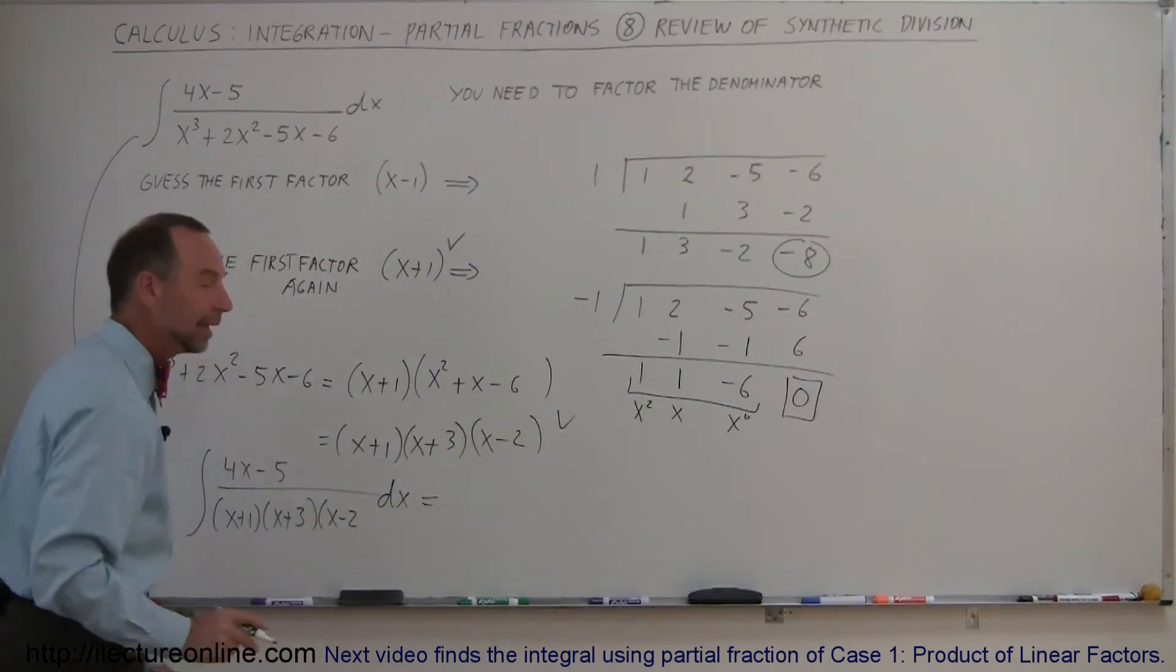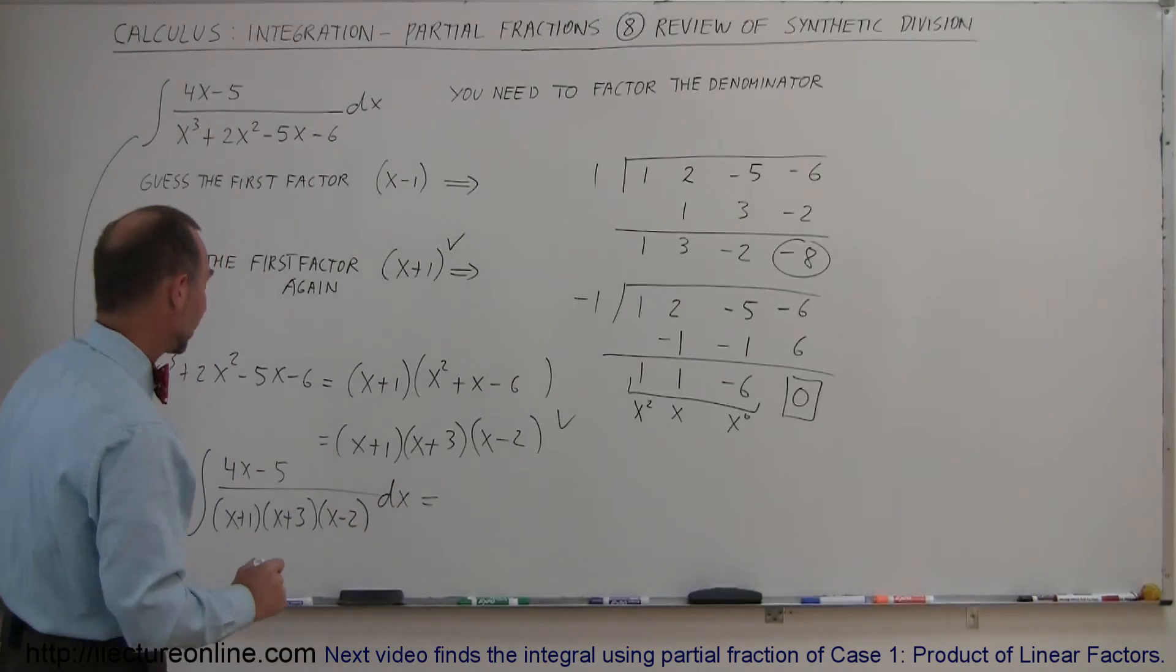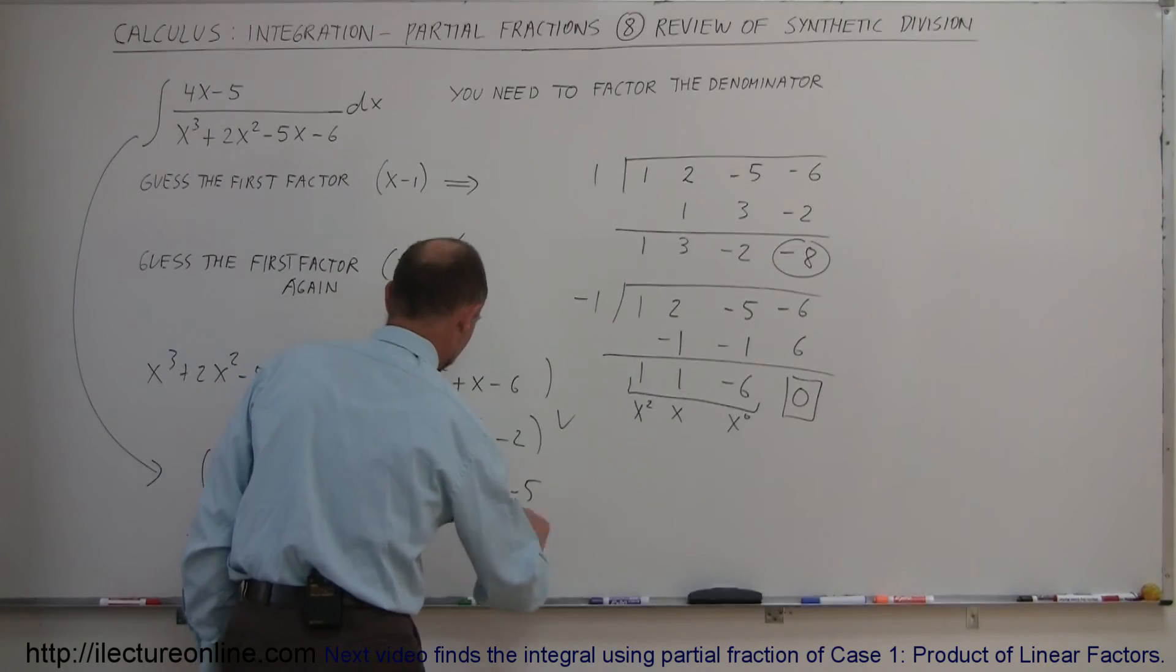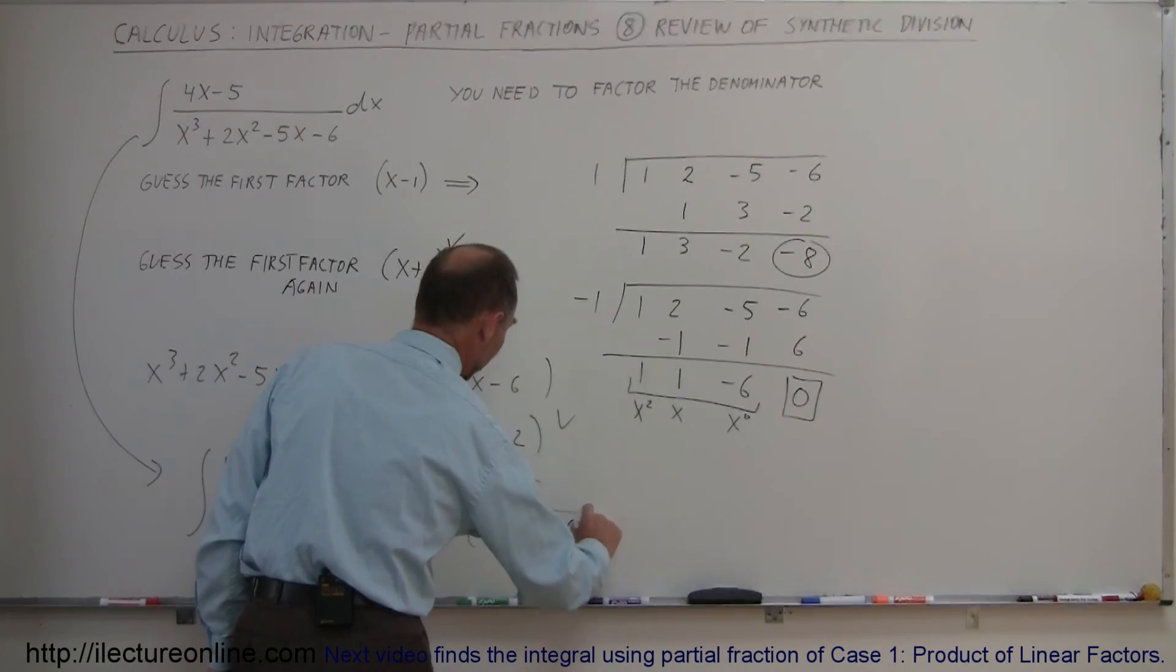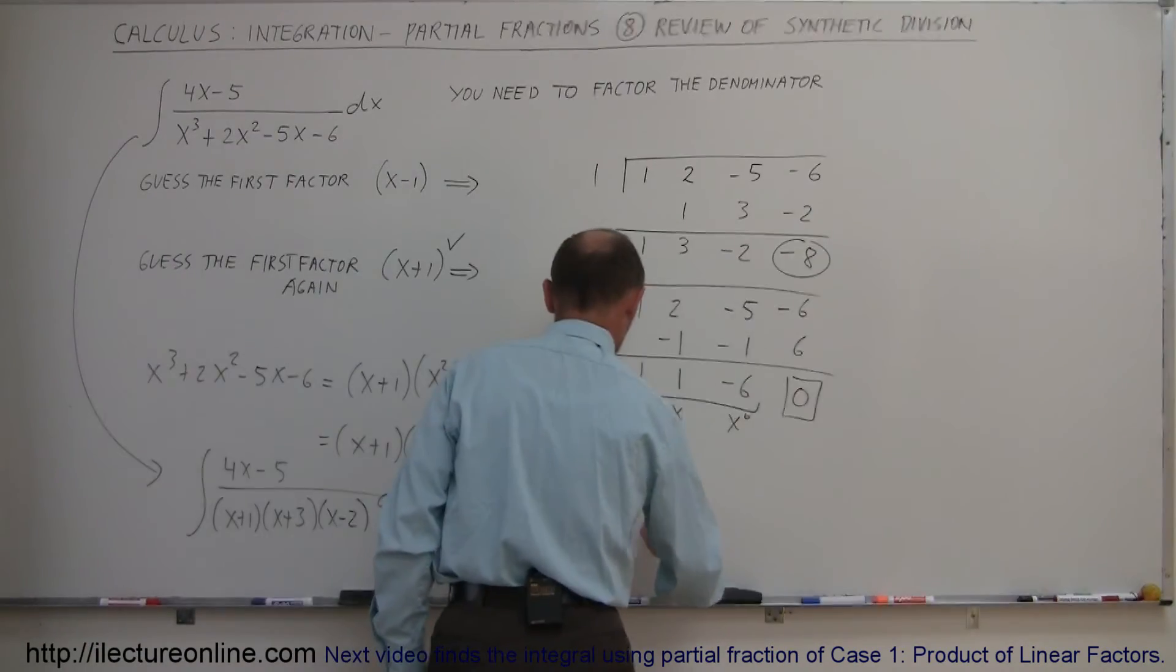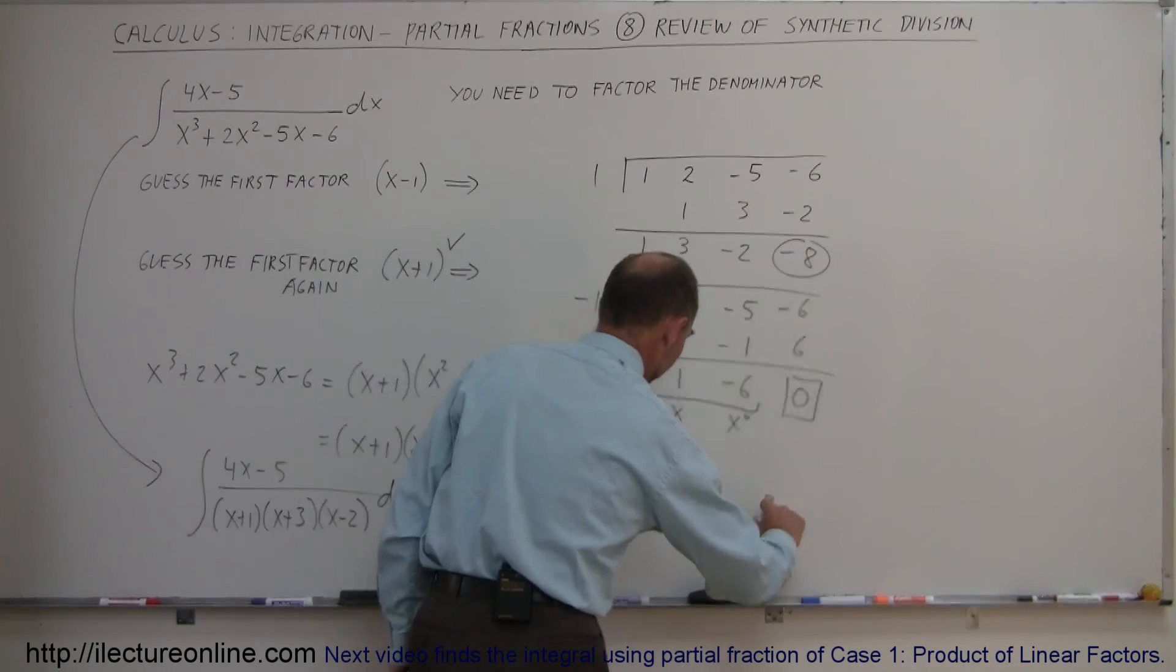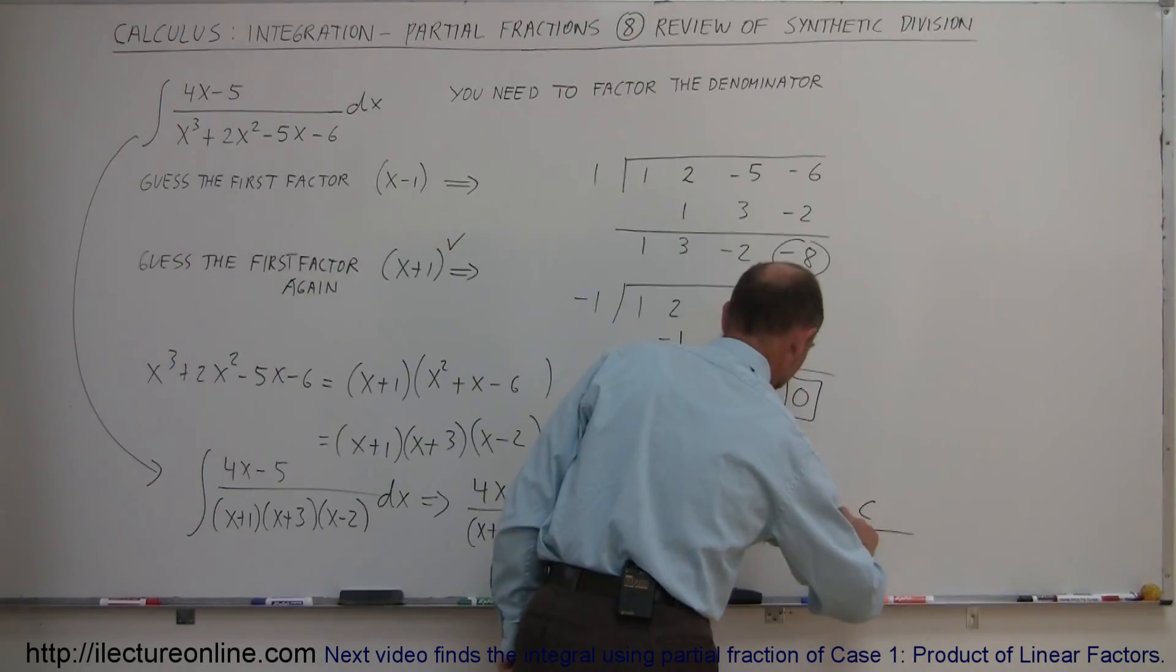Now we can go ahead and write it as a sum of partial fractions. That means I'm going to write this expression, 4x minus 5 divided by x plus 1 times x plus 3 times x minus 2. Notice that those are all linear factors in x. Therefore, I can rewrite this as a sum of partial fractions of A over the first factor x plus 1 plus B over the second factor x plus 3 plus C over the third factor x minus 2.